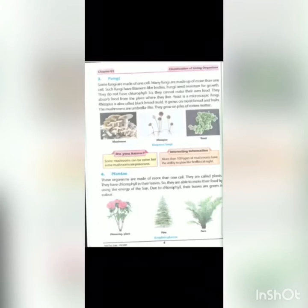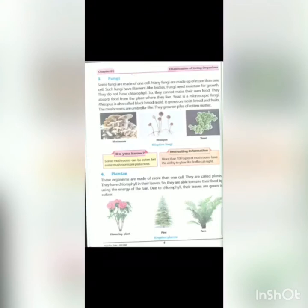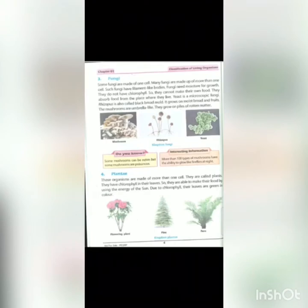The first is Kingdom Fungi. From page number four of our book: some fungi are made of one cell, and many fungi are made of more than one cell. Such fungi have filament-like bodies. Fungi need moisture for growth. They do not have chlorophyll, which is what gives plants their green color.